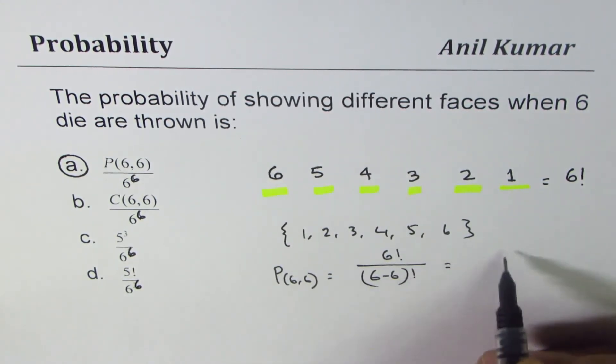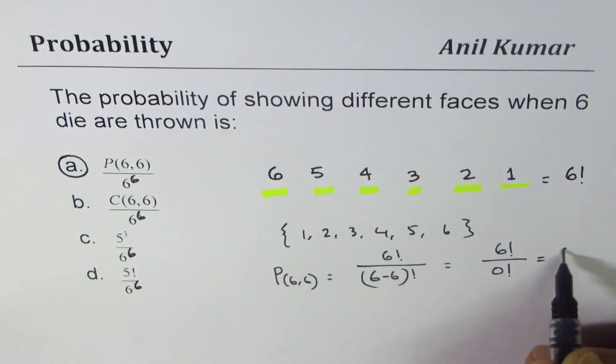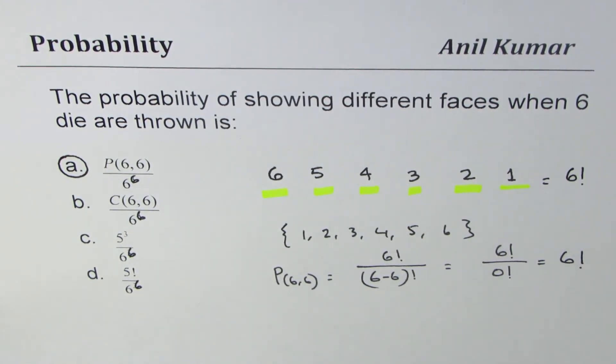So what is that equal to? Permutation six six, six factorial divided by six minus six factorial, which is six factorial divided by zero factorial, or six factorial. So option A is the right option for us. I'm Anil Kumar and I hope that helps. Thank you and all the best.